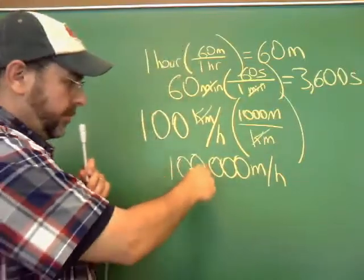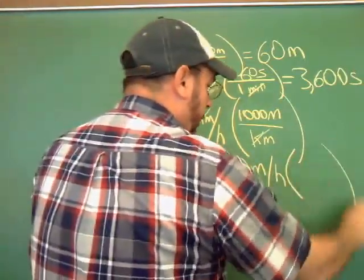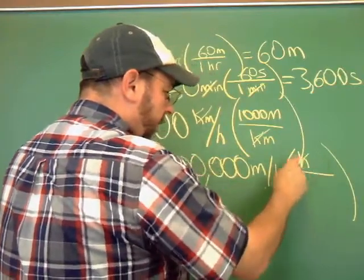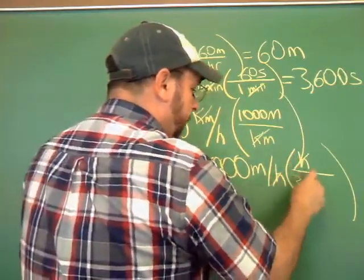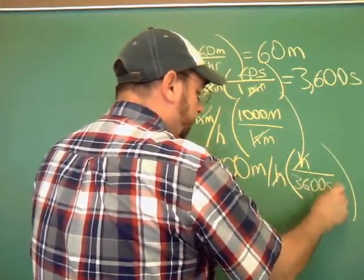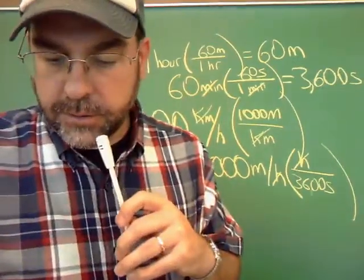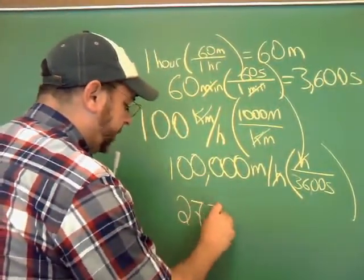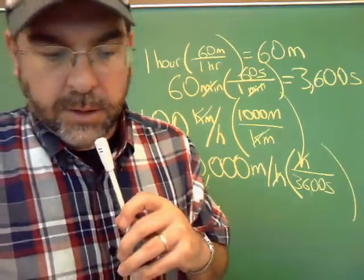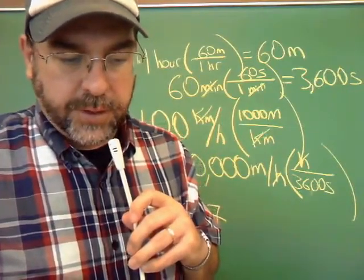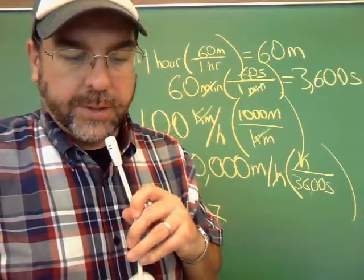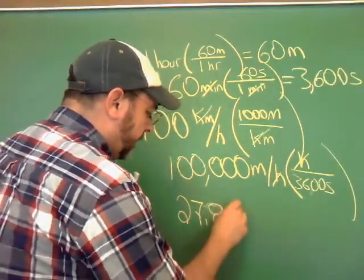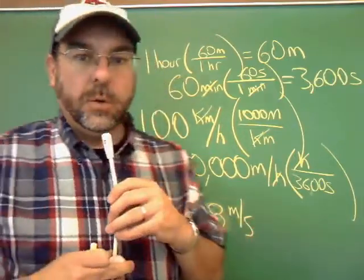Alright. So back to here. 100,000 meters per hour. I want to cancel out hours. There's 3,600 seconds in an hour. I want hour here in my numerator because it wants to cancel out with the hours down there in the denominator. 3,600 seconds. So 100,000 divided by 3,600, and I get 27.7, repeating decimal. But I don't have that many significant figures. 3 is probably a good bet. So 27.8 meters per second.